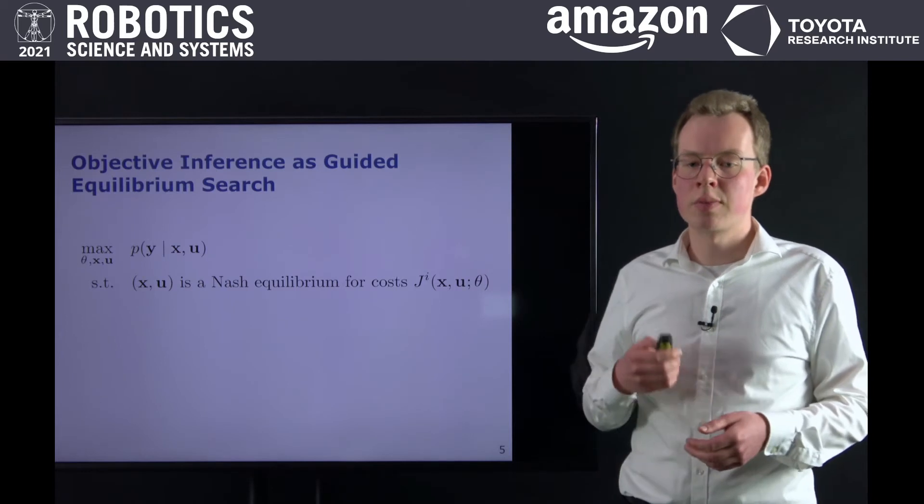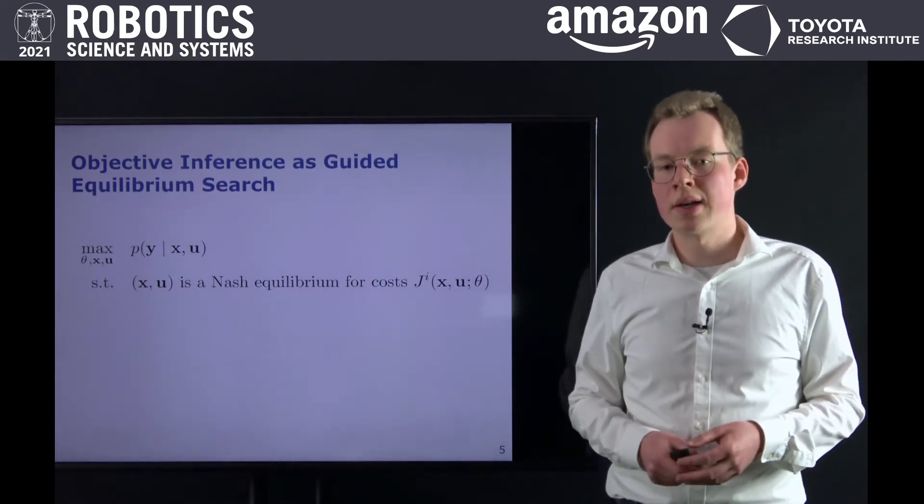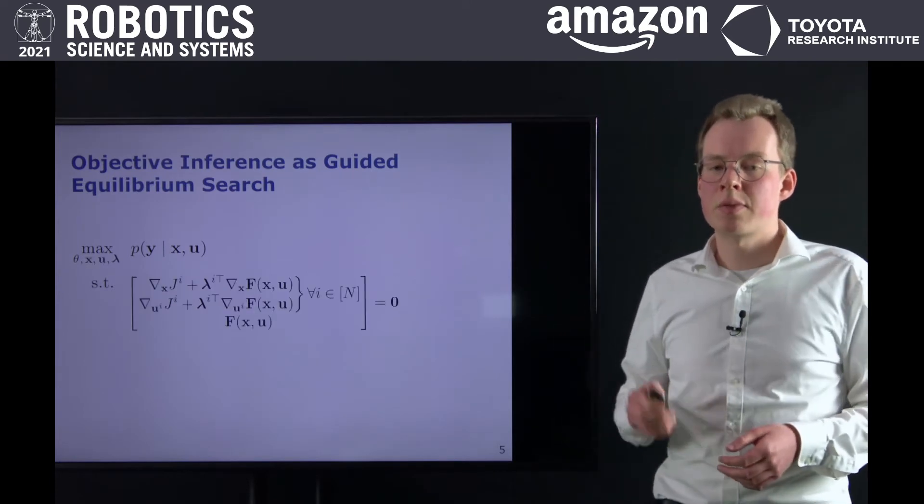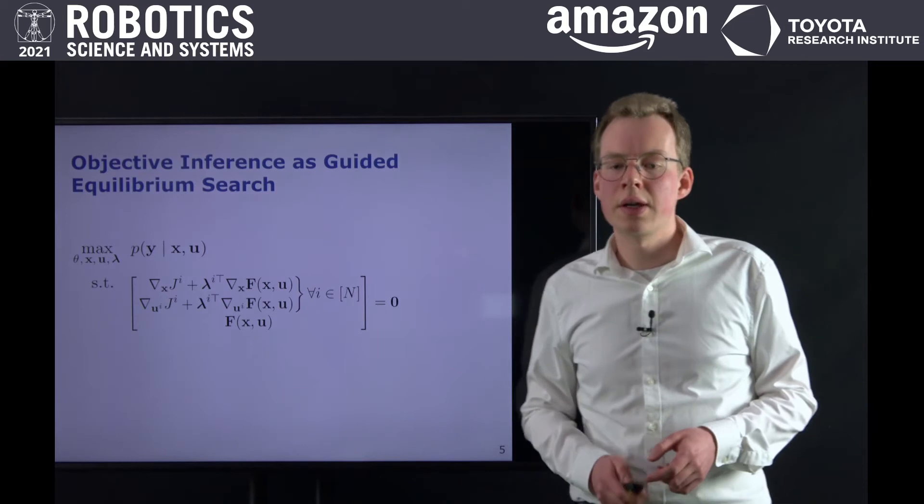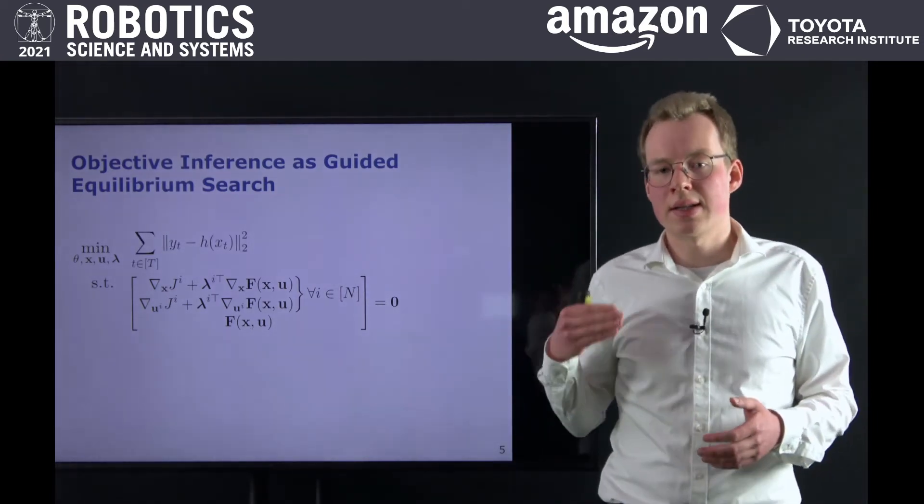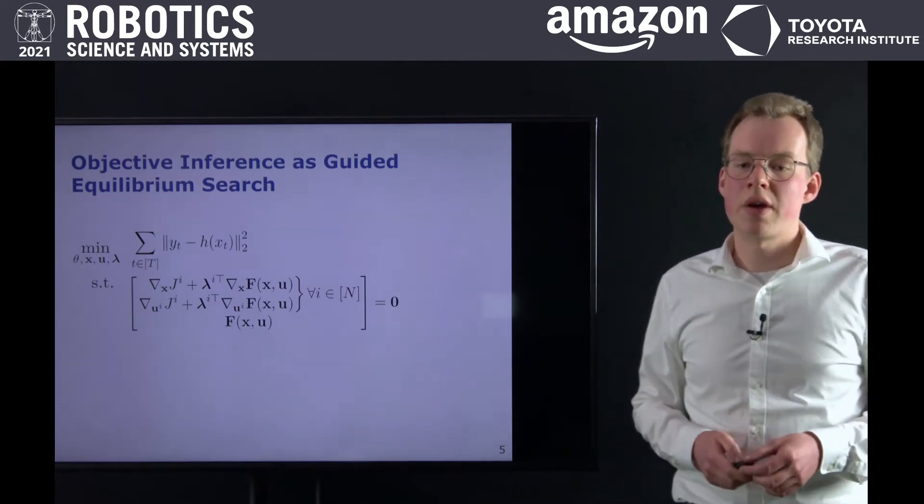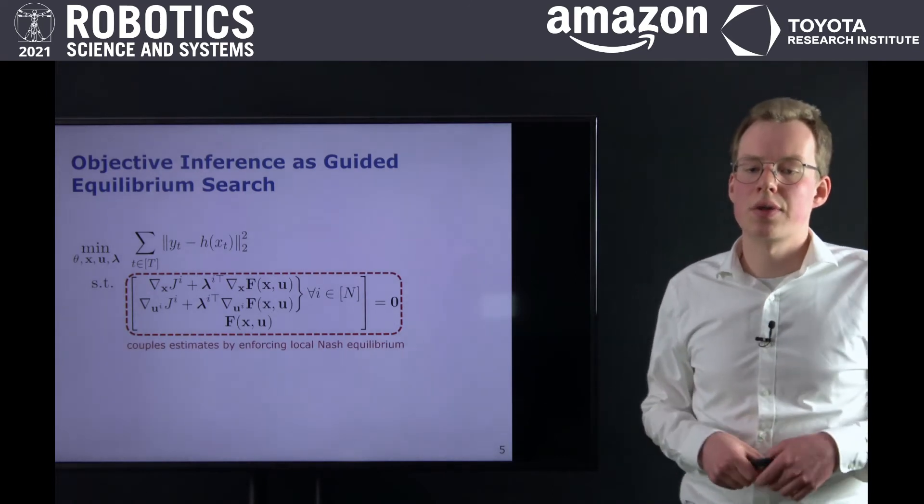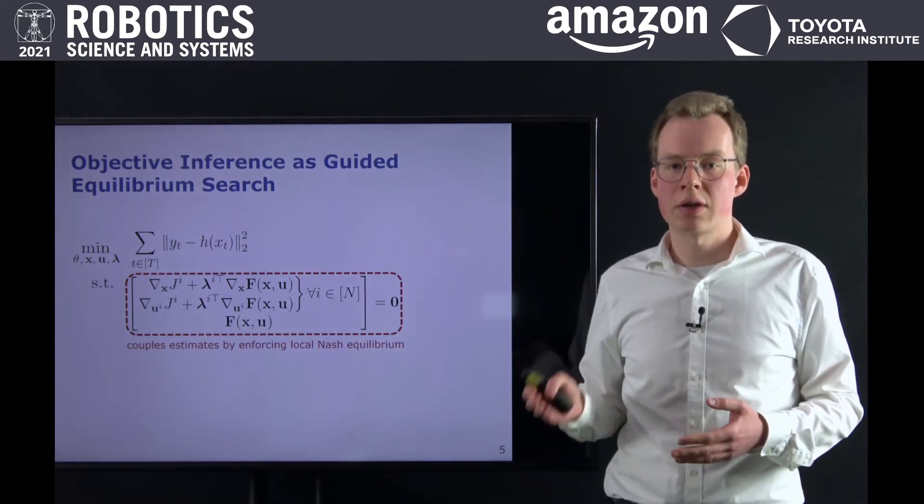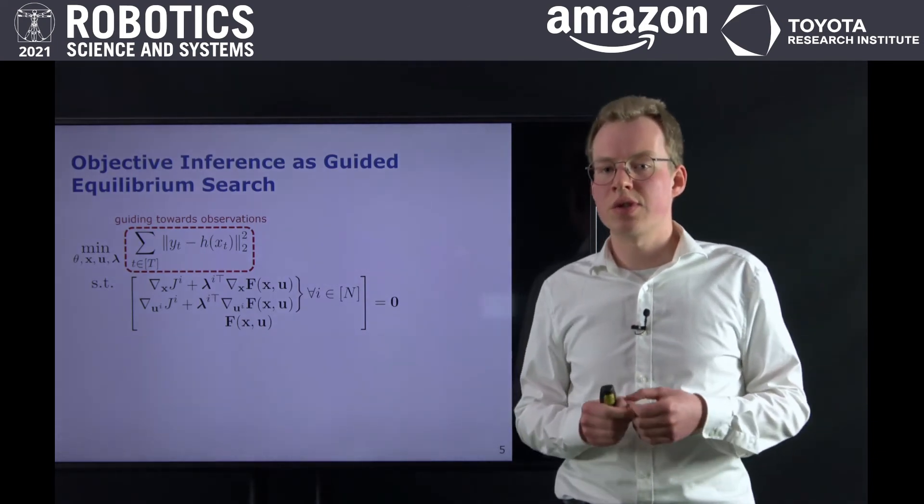In order to tractably encode the equilibrium constraint, we relax it to require only local optimality of the observed behavior, and thus replace it with the corresponding first order necessary conditions. Furthermore, in the case of Gaussian observation noise, this problem can be cast as least squares estimation. To summarize, our method can be understood as guided equilibrium search, where the constraints encode the root finding problem for local Nash equilibrium, and the objective guides the solution towards the observed behavior.